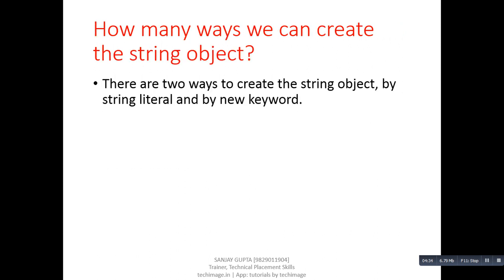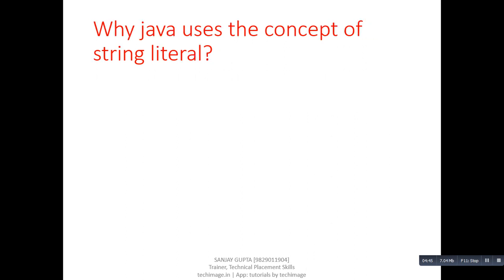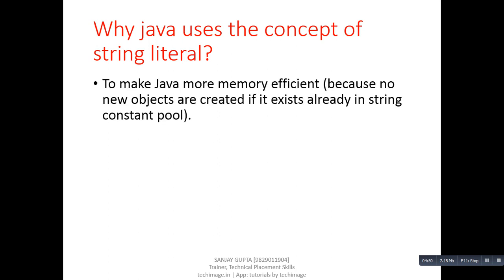Next question: how many ways can we create the string object? Answer: There are two ways — by string literal and by the new keyword. Next question: why does Java use the concept of string literal? Answer: To make Java more memory efficient, because no new objects are created if it already exists in the string constant pool.